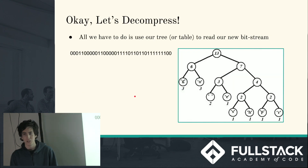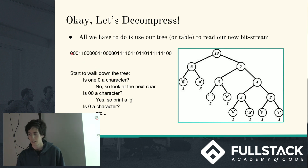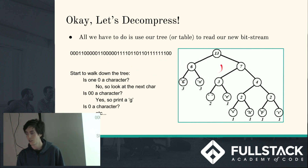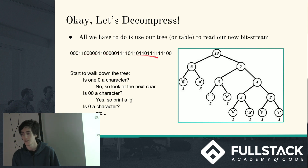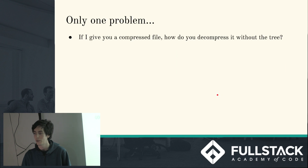Decompressing isn't too difficult — it's basically a recursive process. You start at the beginning: take a 0. If going to 0 from the root gives you something, great; if not, add the next bit — 0, 0 gives you a G. Then 0, 1 gives you an O, and so on until you end up with your completely decompressed string. But there's one problem: if I gave you just this encoded string and told you to decompress it, how would you do it? The answer is, you can't.